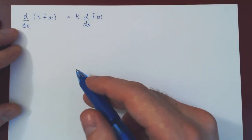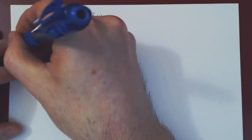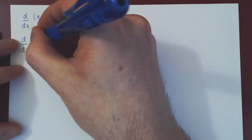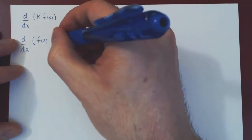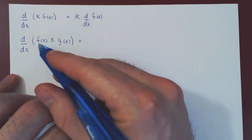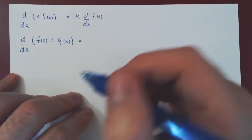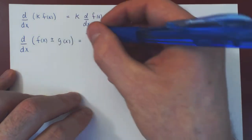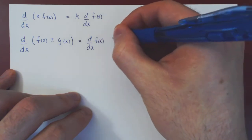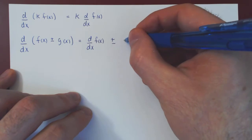That's the first property of the derivative. Second property: if you differentiate, with respect to x, a sum or a difference of two functions — f of x plus or minus g of x — you can separate the derivative. So the derivative over a sum or difference is the sum or difference of the derivatives: the derivative of f, plus or minus the derivative of g.